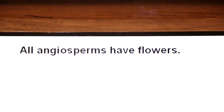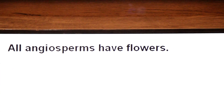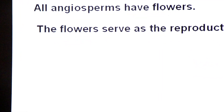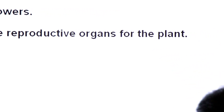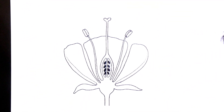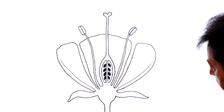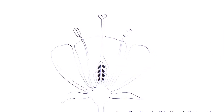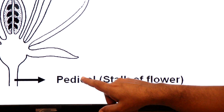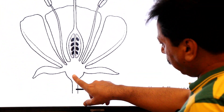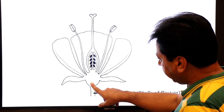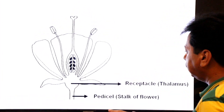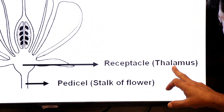All angiosperms have reproductive parts known as flowers. The flower serves as the reproductive organ for angiospermic plants. The stalk of the flower is known as pedicel. There is a swollen and expanded tip on the pedicel called the receptacle, also known as thalamus.